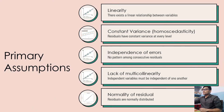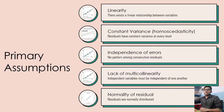We shall discuss the five primary assumptions associated with linear regression. The first one is linearity — there exists a linear relationship between variables. When we talk about variables, these denote the independent variables as well as the dependent variables. The independent variables are the predictor variables, and the dependent variable is the target variable. The target variable here is a continuous-valued variable.